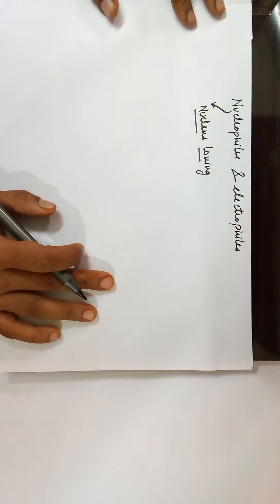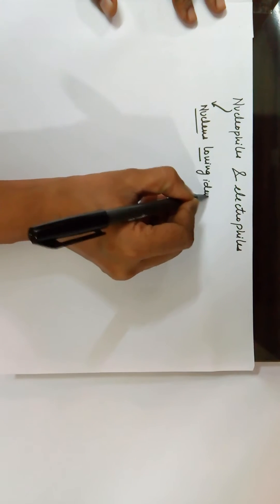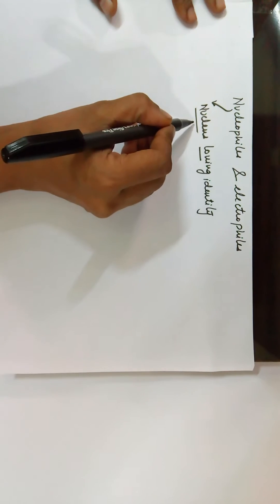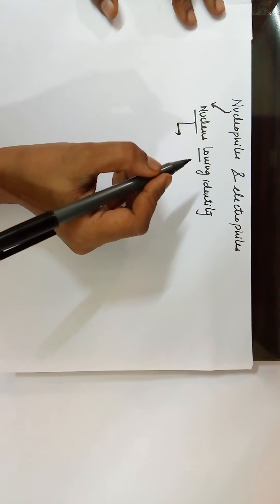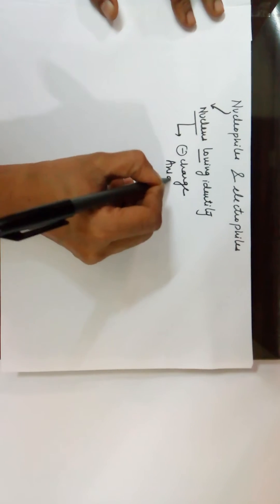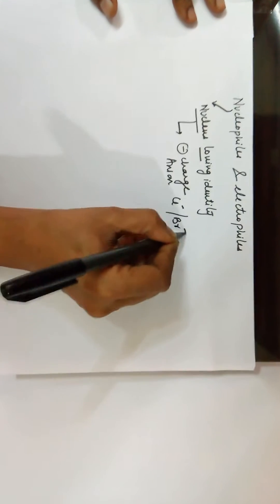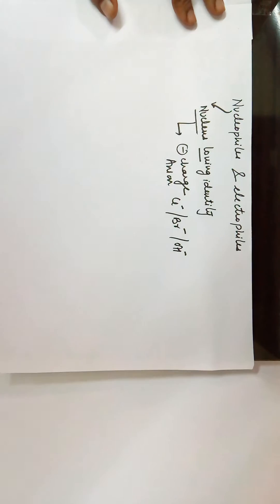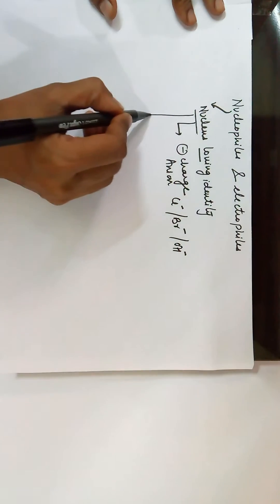The reason is that nuclei are positive in charge, being made up of protons and neutrons, with protons being positive. Since the nucleus is always a positively charged identity, anything attracted towards it must be negatively charged. Nucleus-loving identities fall into two categories: first, anything negatively charged — any anion — so Cl⁻, Br⁻, OH⁻ all fall into this category.